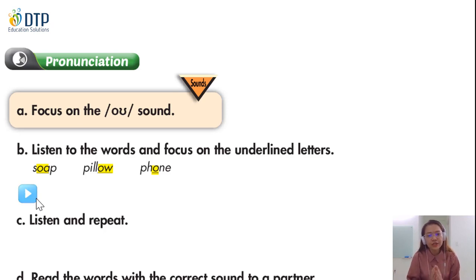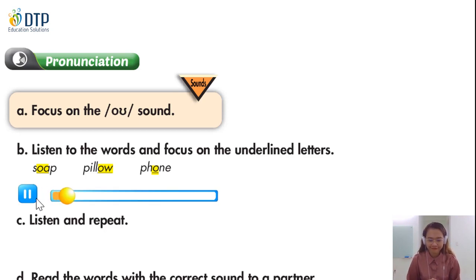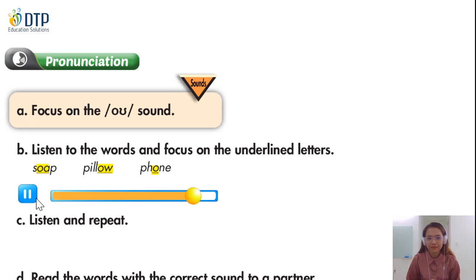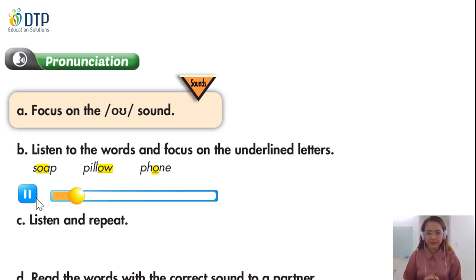Now everybody, listen to the pronunciations of those words and tell me how the underlined letters are pronounced. Listen to the words and focus on the underlined letters. Soap. Pillow. Now listen and repeat: Soap. Soap. Pillow.